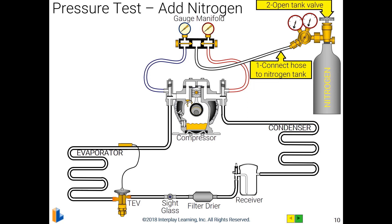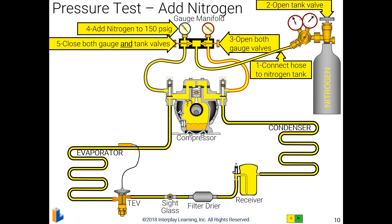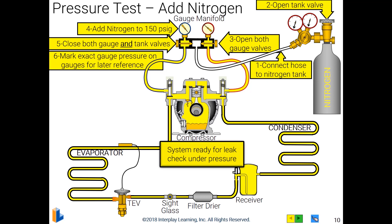For an R22 system, we set our regulator to just over 150 PSIG. We open the tank, open the valves on the gauges, and fill the system with nitrogen, dialing in at exactly 150 PSIG and stopping. We close both gauges on the red and blue and turn off the pressure on the tank. We don't want any leaks in our gauge manifold throwing off our pressures. We don't really need to mark the exact gauge pressure since we use the same pressure every time. The system is ready to go.